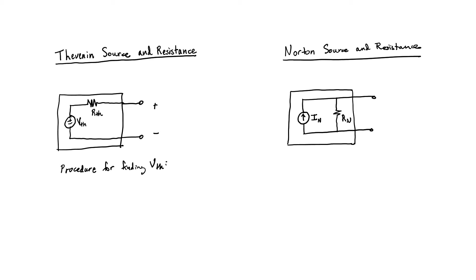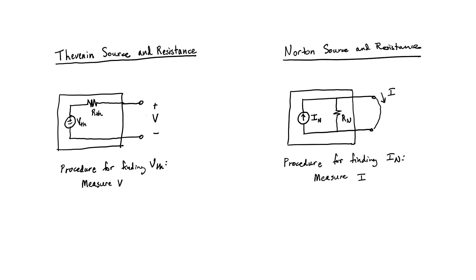The procedure for finding the Thevenin equivalent voltage was simply to measure the voltage at the two terminals. If we want to represent a circuit by its Norton equivalent current source, we merely need to measure the current that would flow out through the terminals if they were short-circuited. In this particular circuit, if we just measure I, it's going to be I sub N.